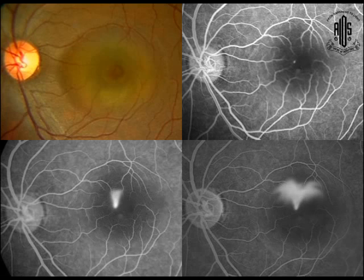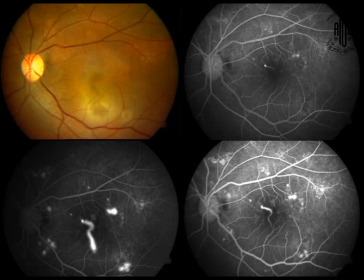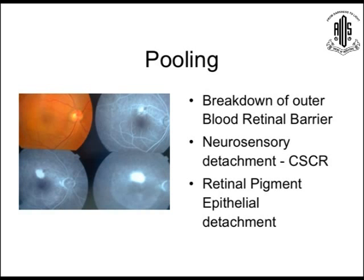This is one typical smokestack pattern. And this is one of the reverse smokestack patterns, which is due to fibrin deposition forcing the dye downward. Then pooling — pooling occurs because of the breakdown of the outer blood-retinal barrier, and there is a neurosensory detachment, which is the hallmark of central serous chorioretinopathy. There is also retinal pigment epithelial detachment, below which pooling occurs. So pooling can be due to neurosensory detachment or RPE detachment.